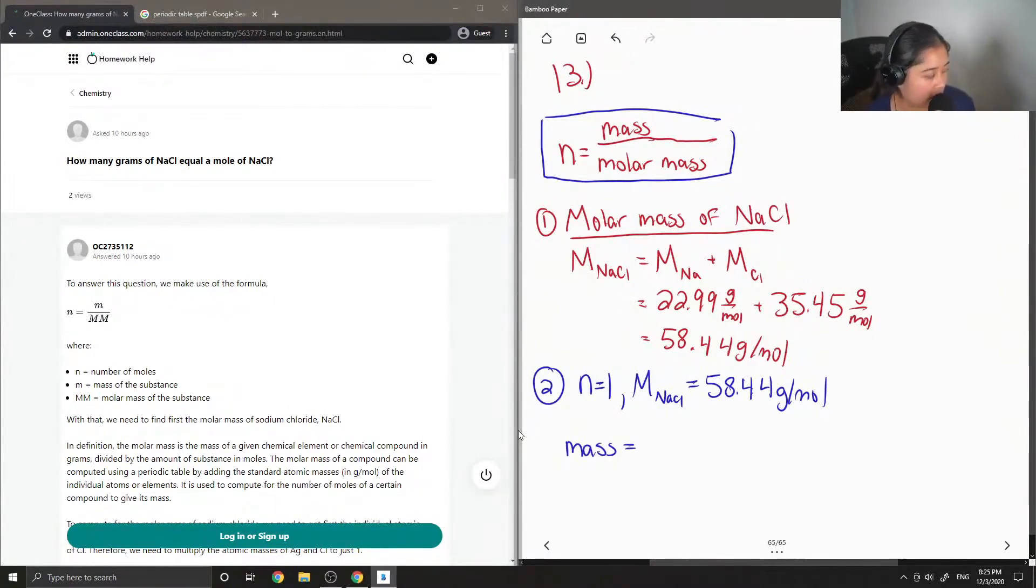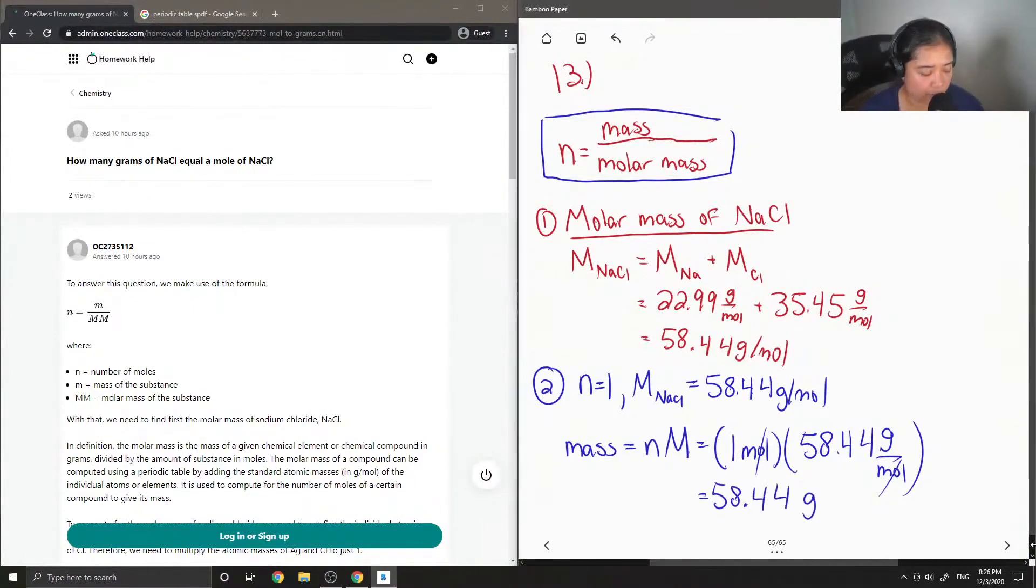So mass is equal to n times capital M. And then we just plug in our values. And our units for moles will cancel out, and multiplying 1 times any number just gives you the same number. So our answer is just 58.44 grams.